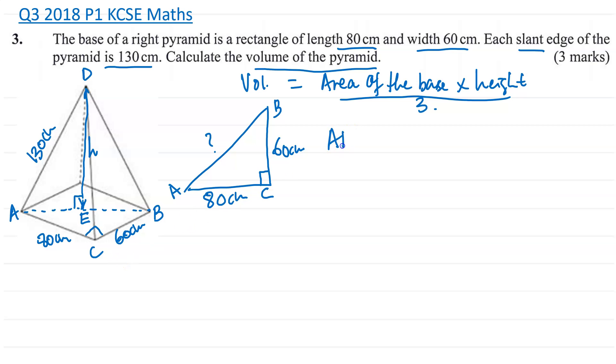Right, so let's use the Pythagoras theorem because we have a 90 degrees at C. So we know AB squared then that's going to be equal to 80 squared plus 60 squared. AB is going to be equal to the square root of 80 squared plus 60 squared. So 80 squared is going to be 6400 plus 60 squared which is 3600, which is going to be equal to the square root of 10,000. Therefore then AB is going to be equal to 100 centimeters.